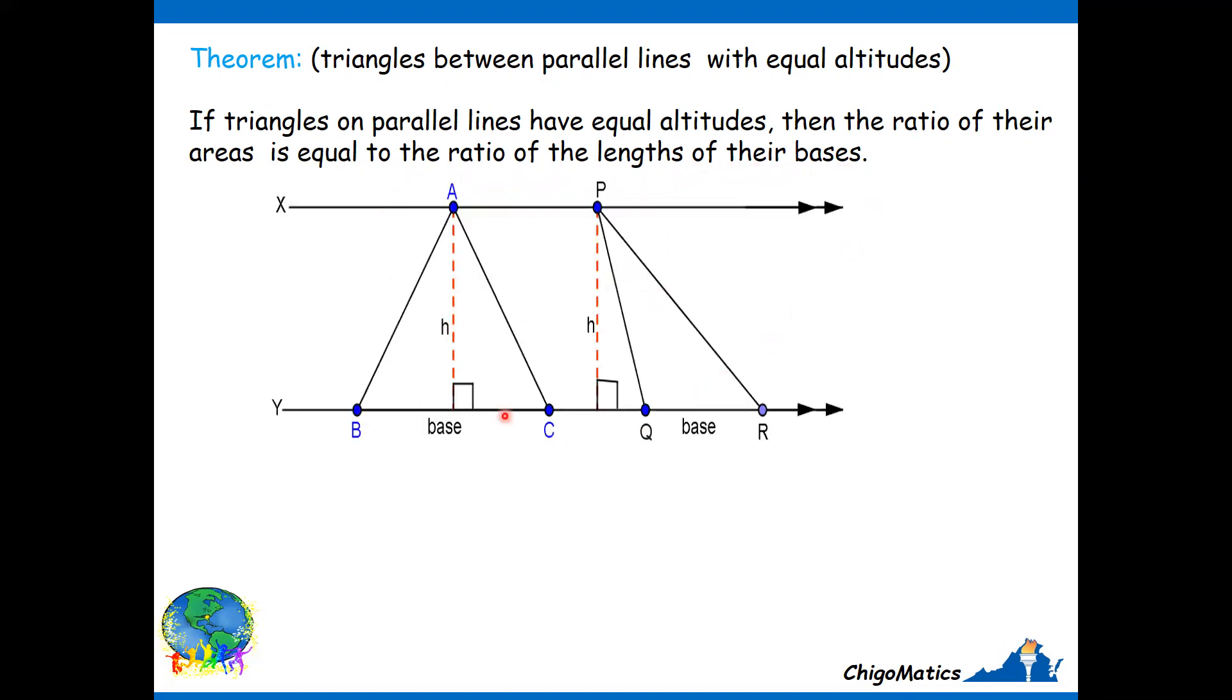Here is the model of that theorem. This is the base of the first triangle ABC. QR is the base of the second triangle PQR, but they have the same height, because they are between the same parallel lines. So the distance between parallel lines will never change.